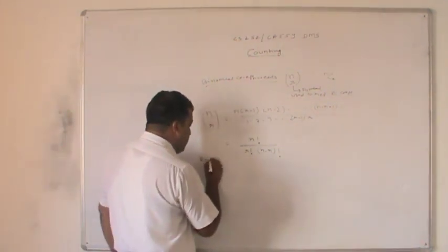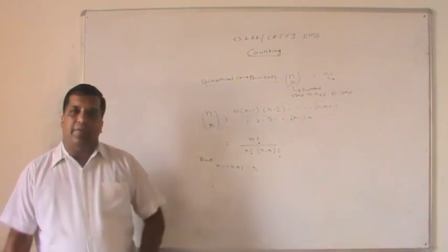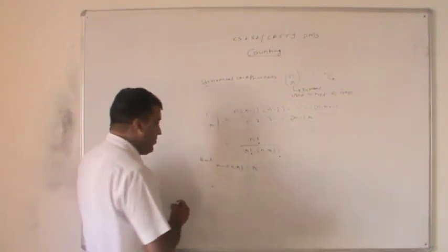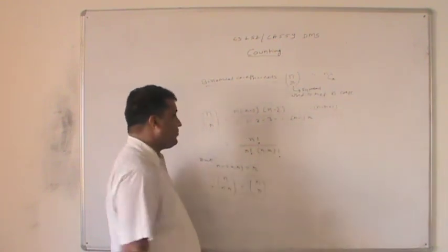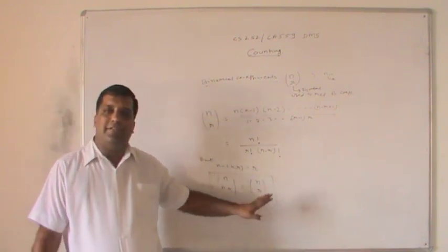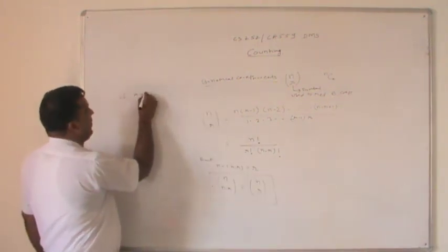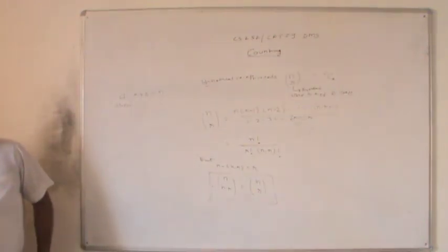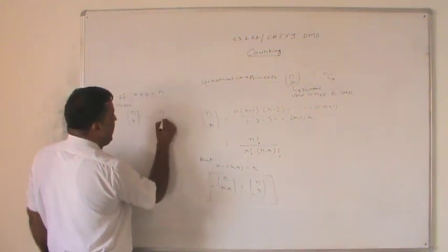One important rule to remember: C(n, n-r) equals C(n, r), because n minus (n minus r) simplifies to r. So if a plus b equals n, then C(n, a) equals C(n, b).